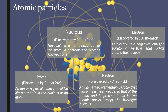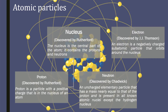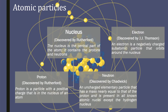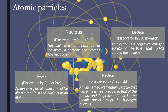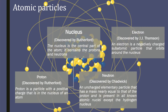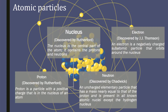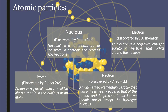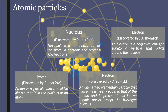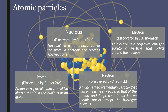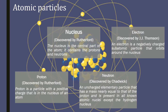The nucleus is the central part of the atom. It contains protons and neutrons. A proton is a particle with positive charge that is in the nucleus of an atom. A neutron is an uncharged elementary particle that has mass nearly equal to that of a proton and is present in all known atomic nuclei except the hydrogen nucleus. Protons and neutrons are called nucleons, present inside the nucleus.